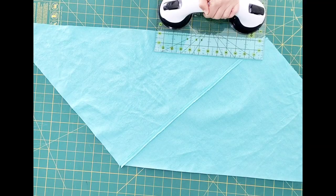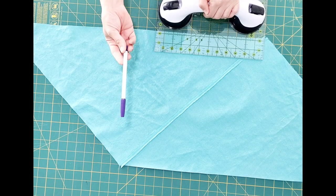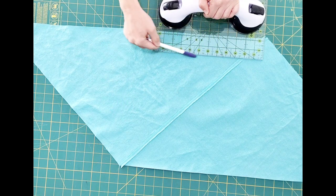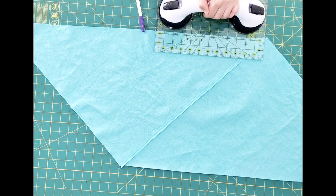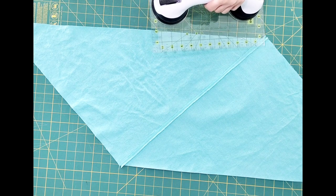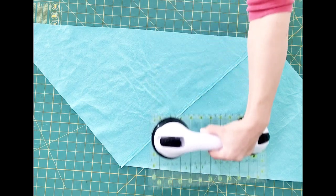Now I'm going to use my ruler again and a fabric marker to mark two and a quarter inch strips, starting with the bottom long edge of my triangle. I'm going to mark these two and a quarter inch portions all the way up to the top.